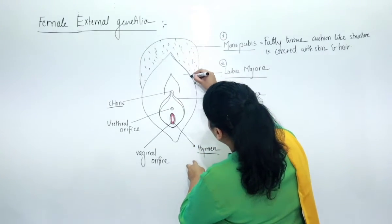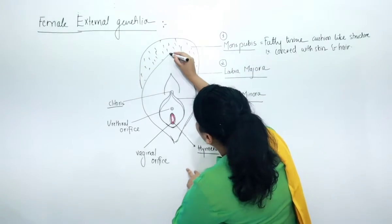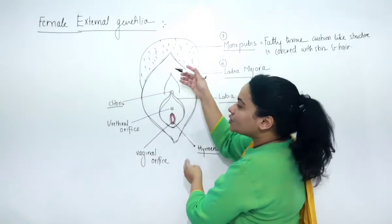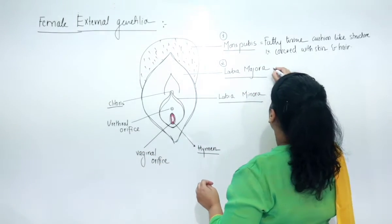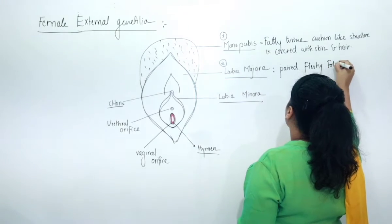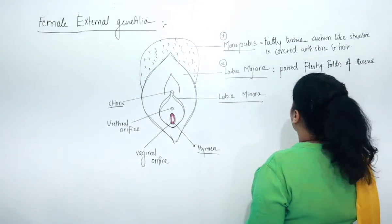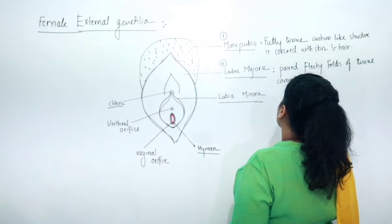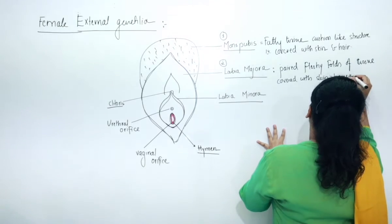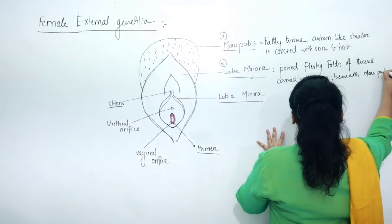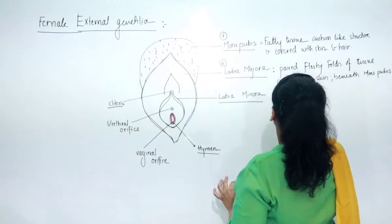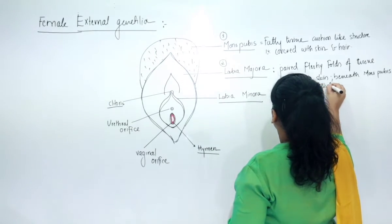Labia majora are the two extended portions beneath mons pubis. They are paired fleshy folds of tissue covered with skin, located beneath the mons pubis. Always remember that labia majora does not have hair follicles — it lacks hair follicles.